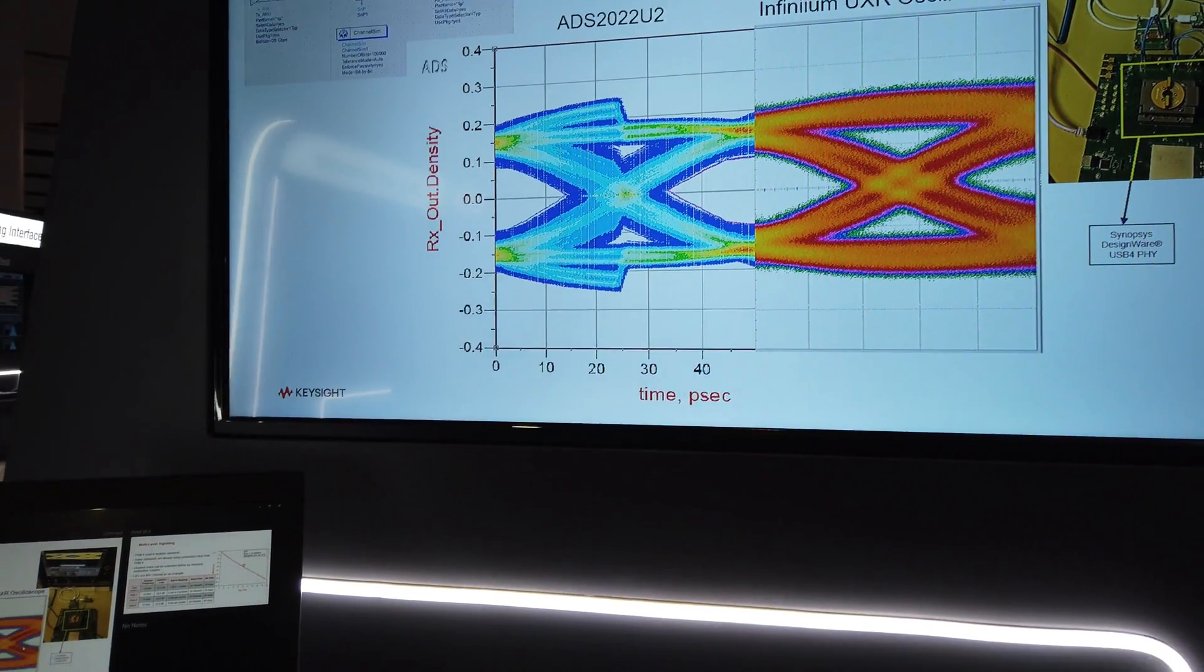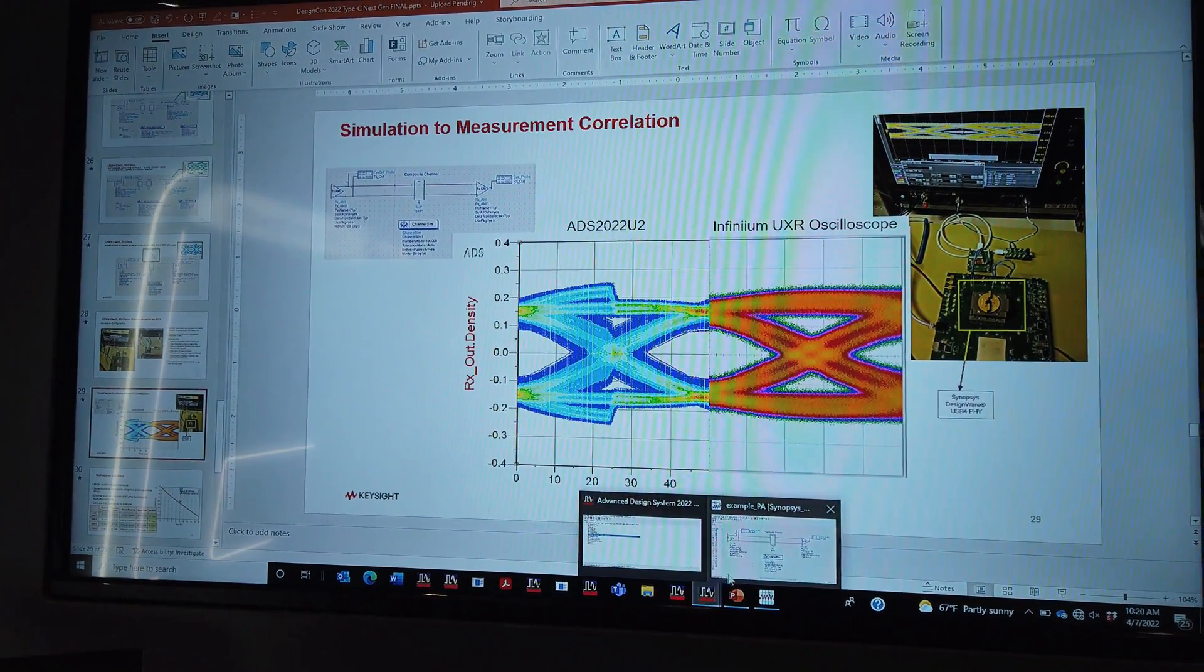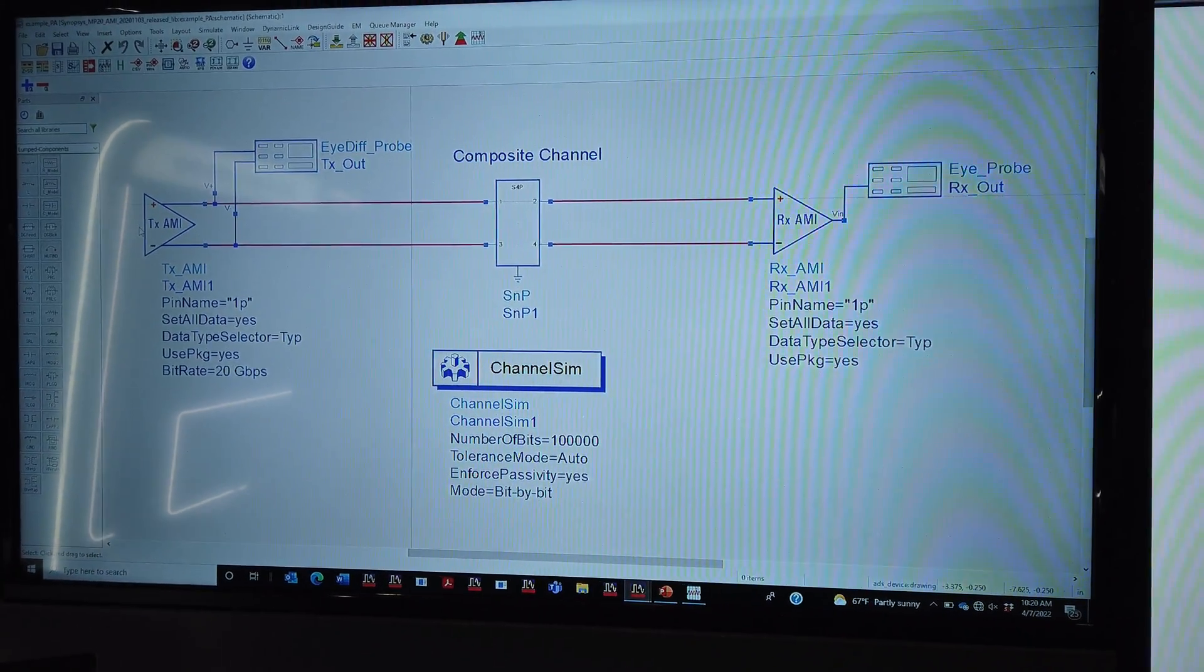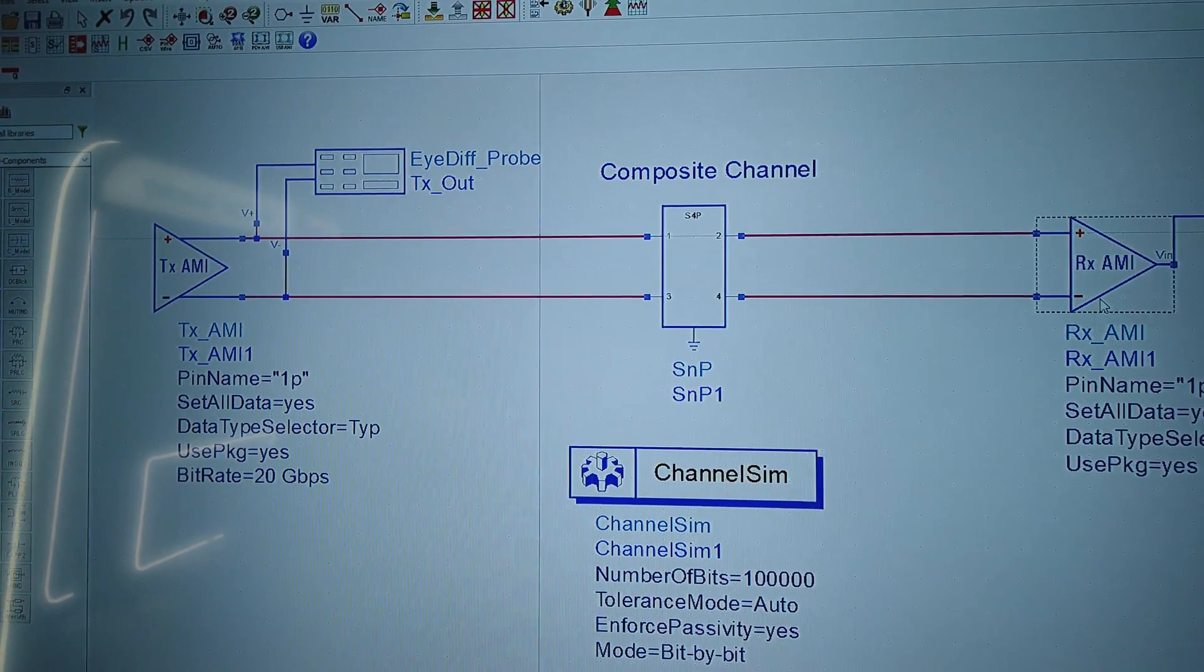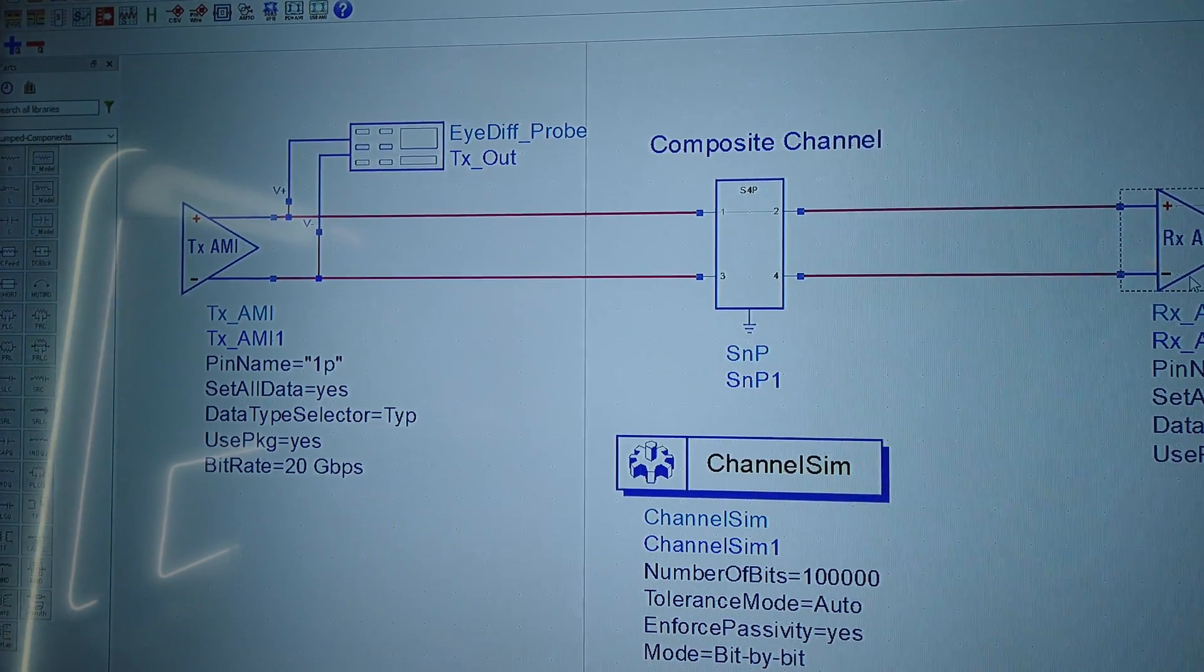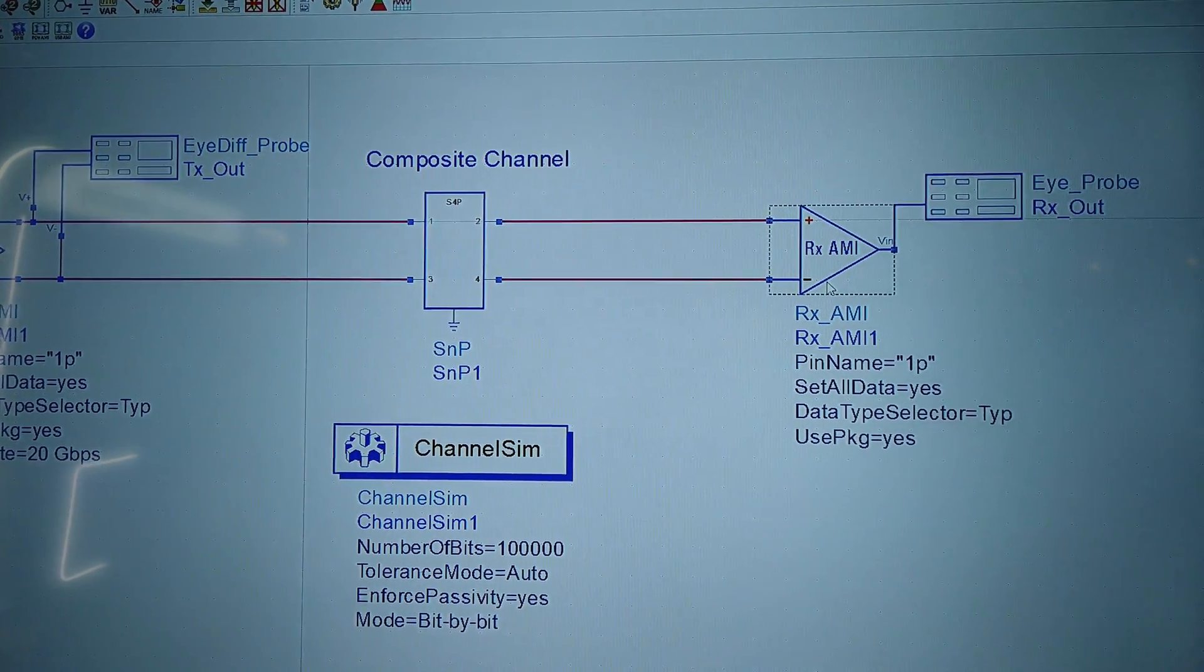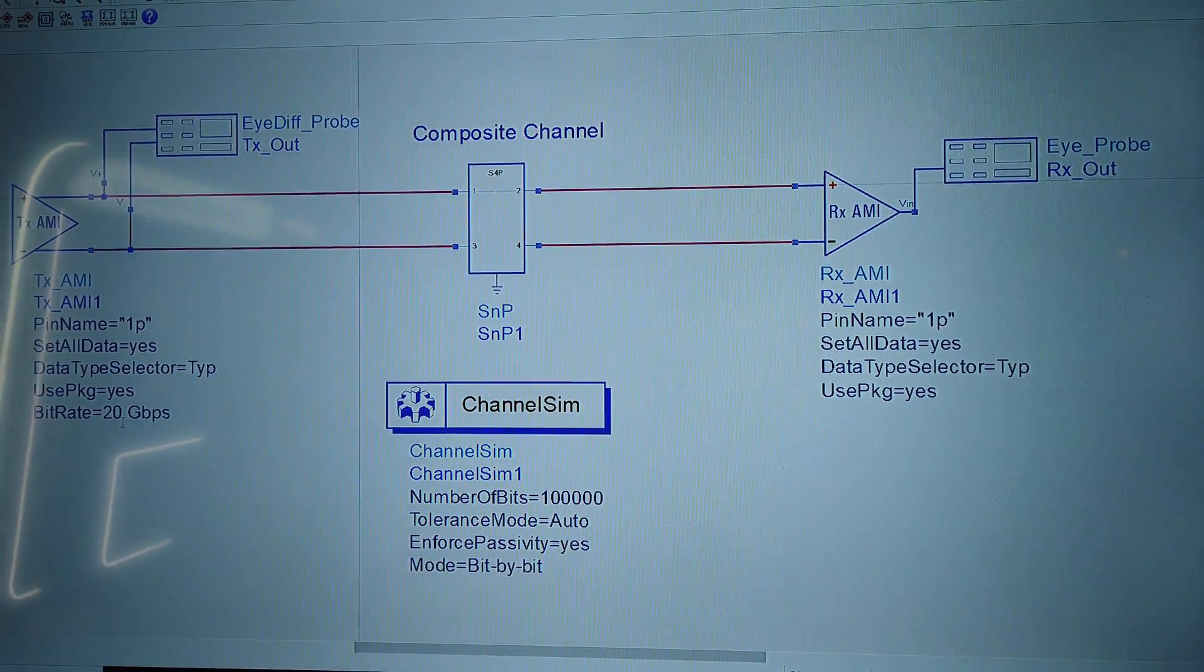Let's take a quick look at the simulation test bench that we've used in ADS. What we have are a transmitter IBIS AMI model and a receiver IBIS AMI model, each representing the transmitter and receiver for the DesignWare 5 from Synopsys. You can see that we're running this at 20 gigabits per second,